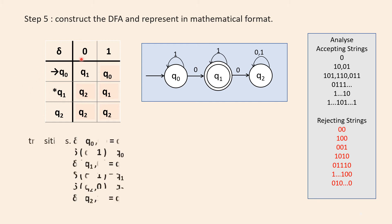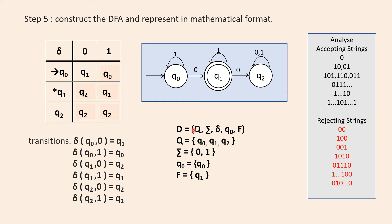This is the completed transition table. Q-naught on zero goes to q1; q-naught on one is looped to q-naught itself. Q1 on zero goes to q2; q1 on one is looped to q1 itself. Q2 on zero and q2 on one are looped to q2 itself. The mathematical representation: the states are q-naught, q1, and q2. The input symbols are zero and one. Q-naught is the start state and q1 is the final state.